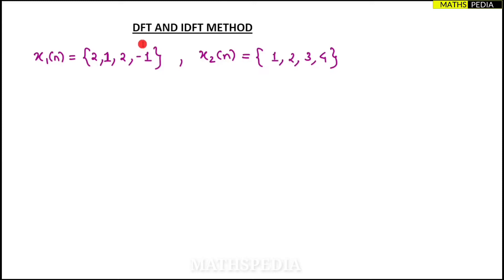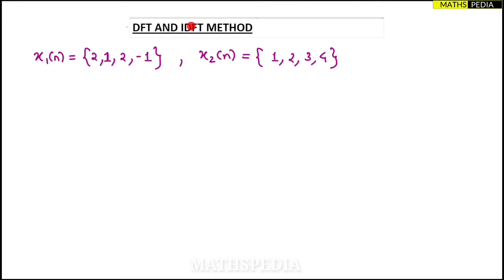In this video we are going to find out the IDFT and DFT method. We are using this method in order to find out the circular convolution of two sequences, x1(n) and x2(n). This method is also called Stockham's method. First we'll go for DFT, then we'll go for IDFT.